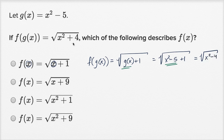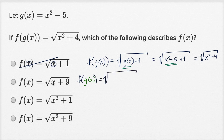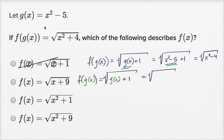Well, that's not what they have here — they have x squared plus four, so this isn't going to be right. Let's try this one. F of g of x is going to be equal to the square root of — everywhere you see an x, replace it with g of x — the square root of g of x plus one. Wait, let me be careful here. This is actually going to be g of x plus nine — very important detail.